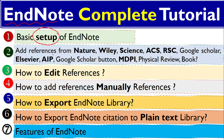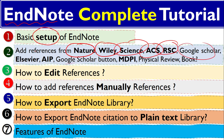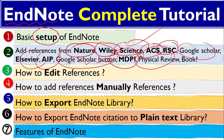The second step is how to add references from Nature, from Wiley journals, from Science, from American Chemical Society, the Royal Society of Chemistry, Google Scholar, Elsevier, AIP, the Google Scholar button — this one is very very important — MDPI journals which are open access journals, Physical Review, and books or book chapters.